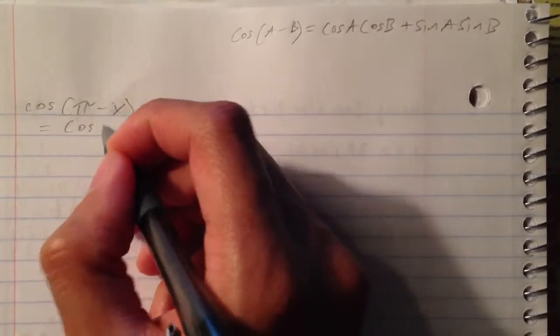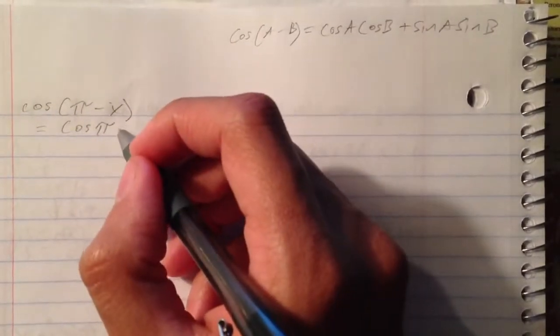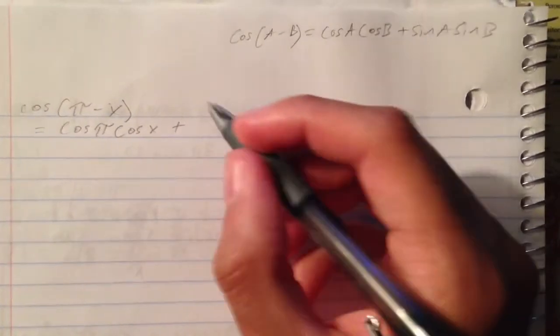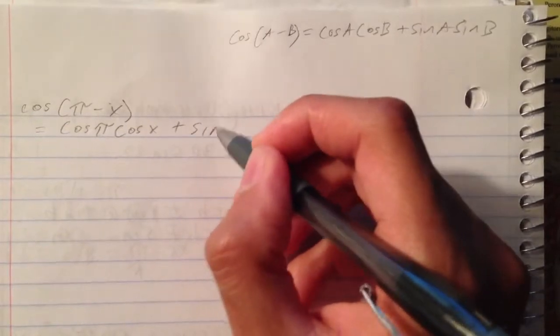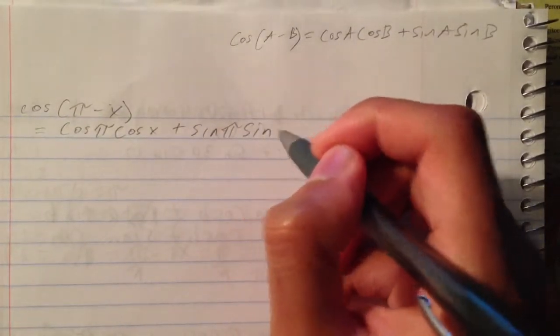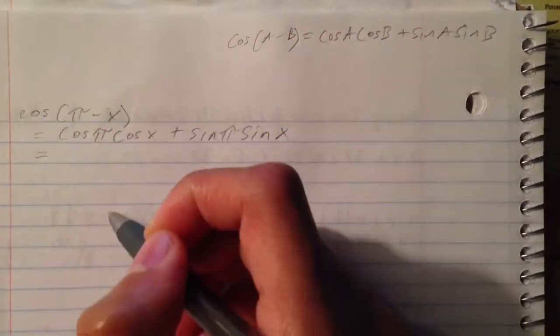So cosine... cosine, since it's negative we add. Then it's sine sine. Okay, that's the first step.